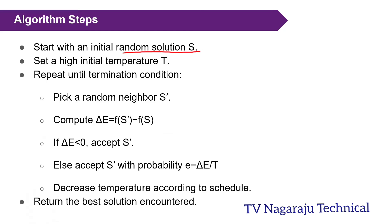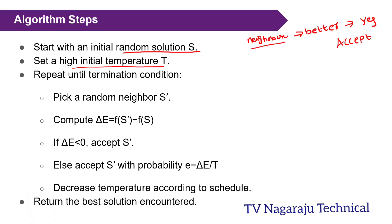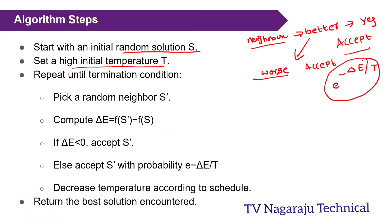Here is the algorithm. Start with some initial solution — any random solution. Initially set one temperature T. Then pick a neighbor. If the neighbor is a better solution, we always accept it — this is the same as hill climbing. But in another situation, even if the neighbor is the worst one, we can accept it with some probability e^(-ΔE/T). Based on this probability value we can accept the worse neighbor too.